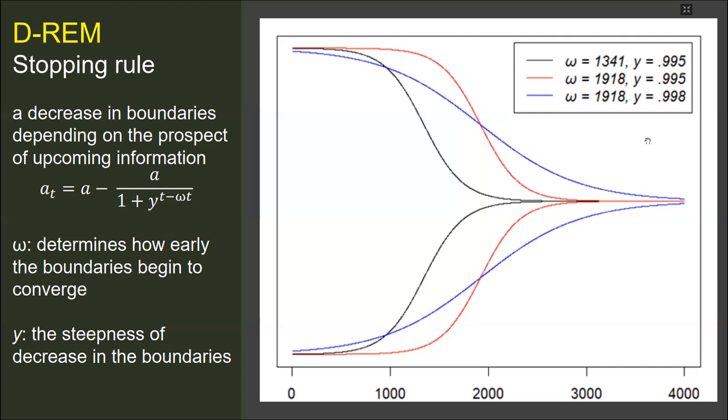And such decrease can be formulated as in the equation on the screen. It is an arbitrary formula based on the sigmoid function, which can be considered necessary. There are two important values in this equation. First, it includes an omega parameter, which determines how early the boundaries begin to converge. Second, psi value is a scaling parameter for the steepness of decrease in the boundary.